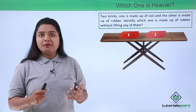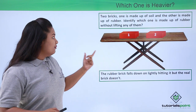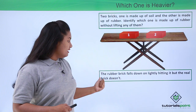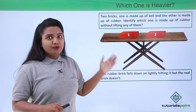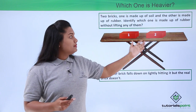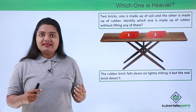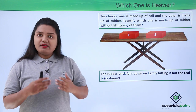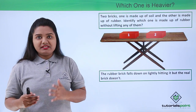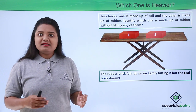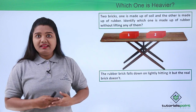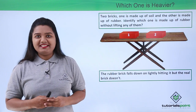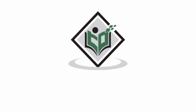So this is how we can identify which brick is made of rubber using the property of inertia — the rubber brick falls or moves with a light hit, but the soil brick does not. This is all about inertia and mass. In this video we have learned that inertia is the tendency of a body to resist any change in its state of rest or motion, and the mass of a body is a measure of its inertia. I hope this video was helpful. Thanks for watching TutorialsPoint — Simply Easy Learning.